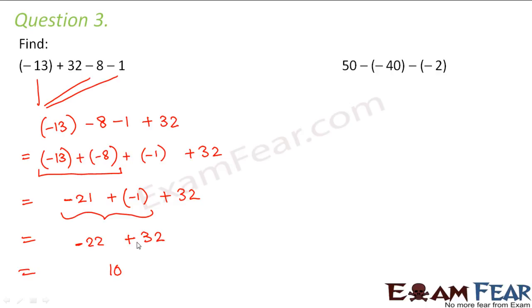So 32 minus 22 is 10 and you put the sign of the bigger number. So here the bigger number is 32. So 32 has a positive sign. So the answer would be positive.